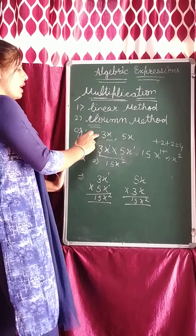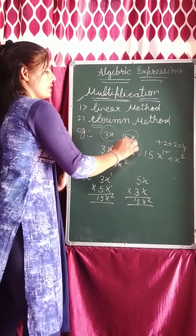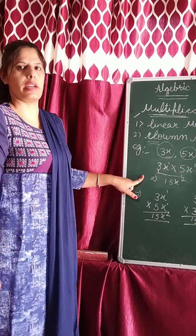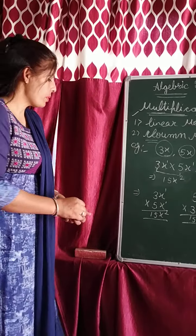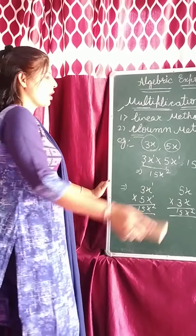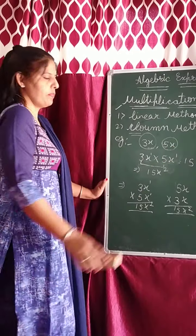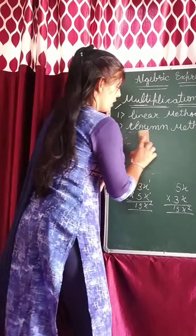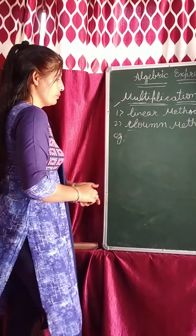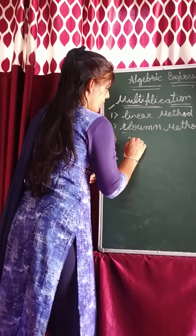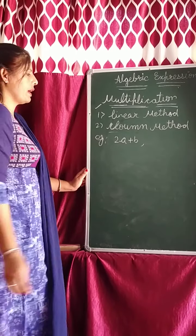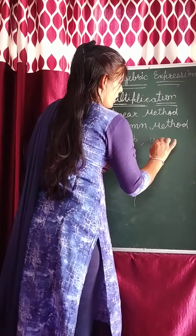So this was — if you get single variables, then using the linear method and column method, how do you solve it? Clear? Now we will see that if instead of a single variable, you get a double variable, then how to solve it. For example: 2A plus B — you have to multiply this with 4A.